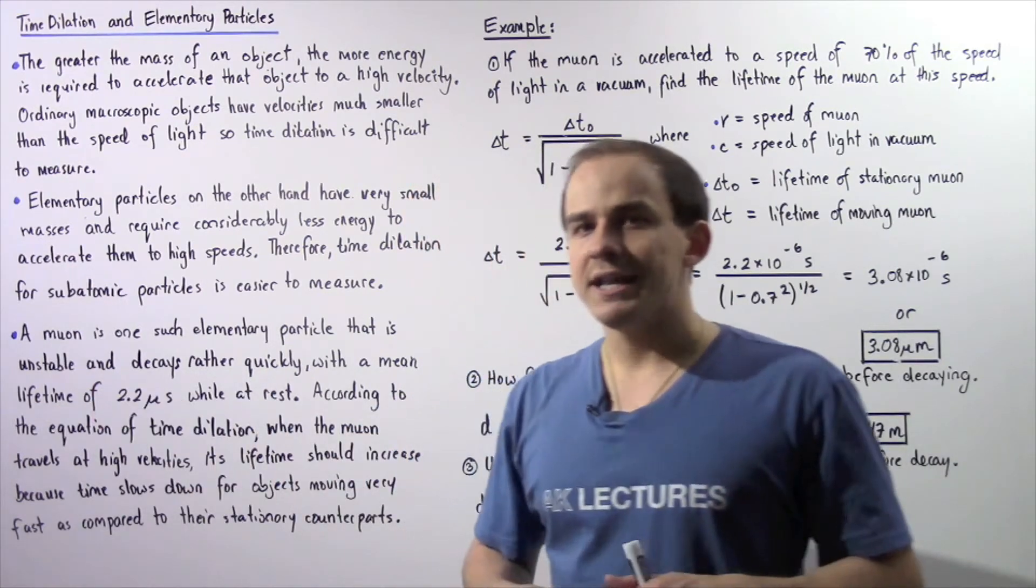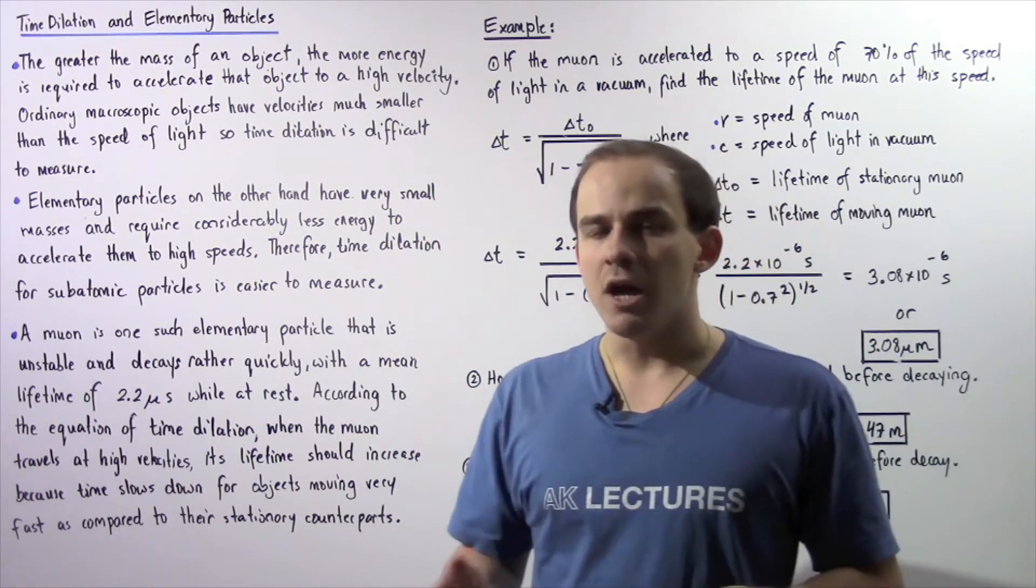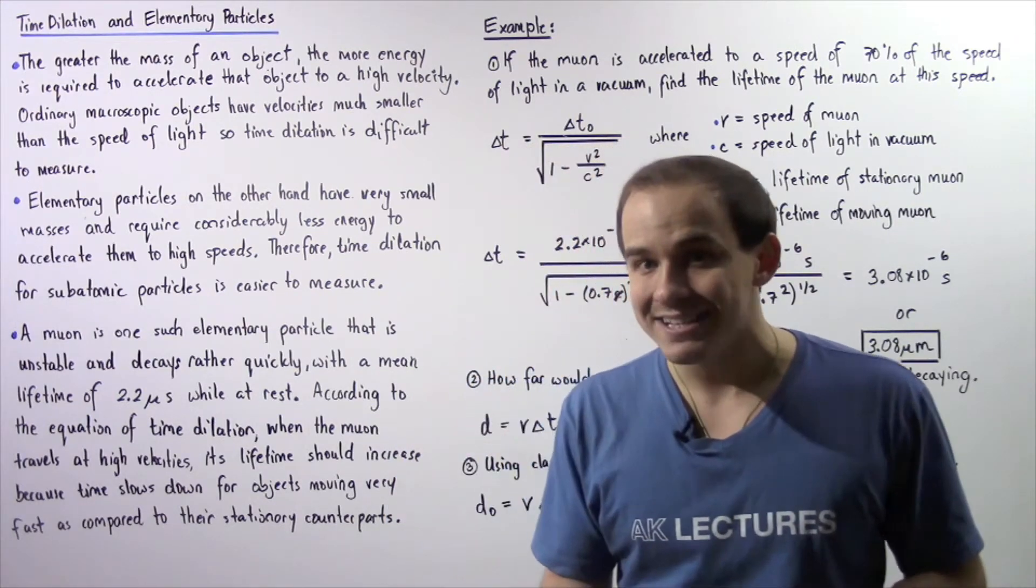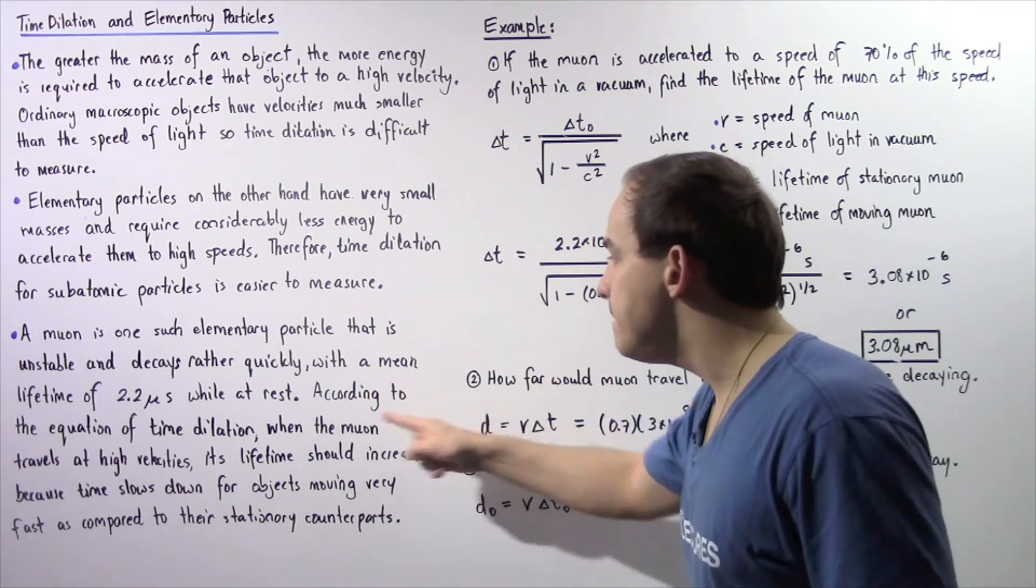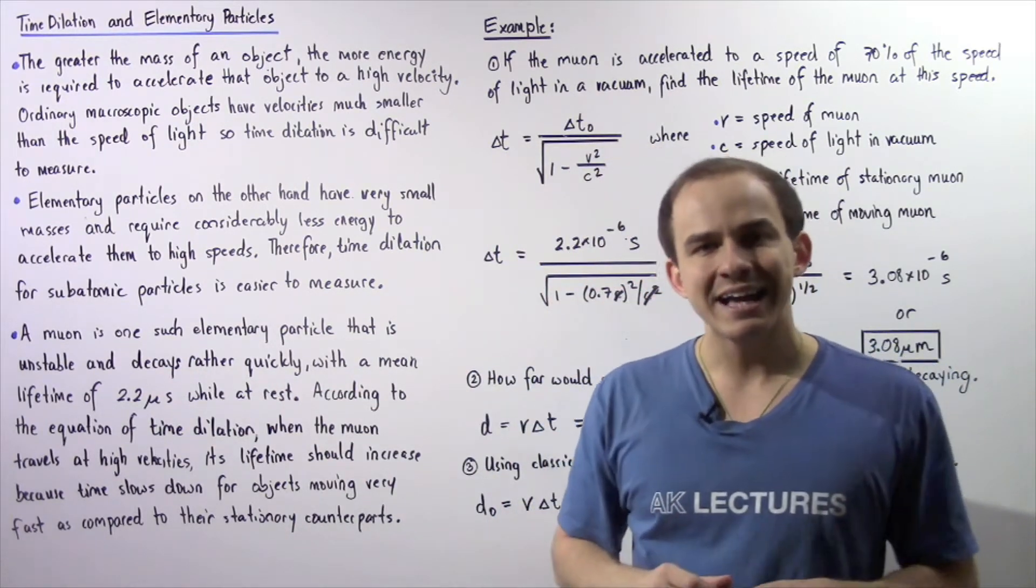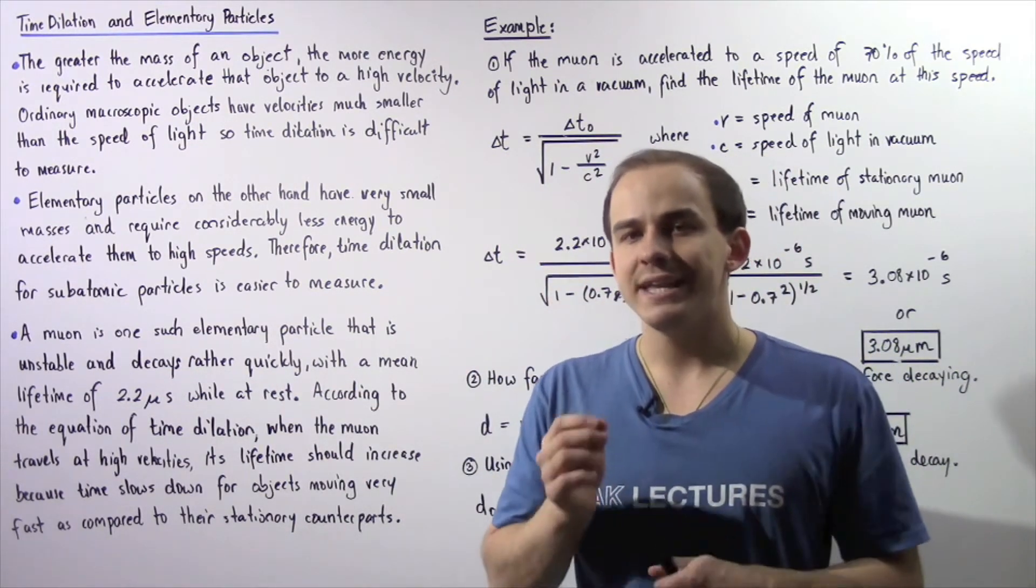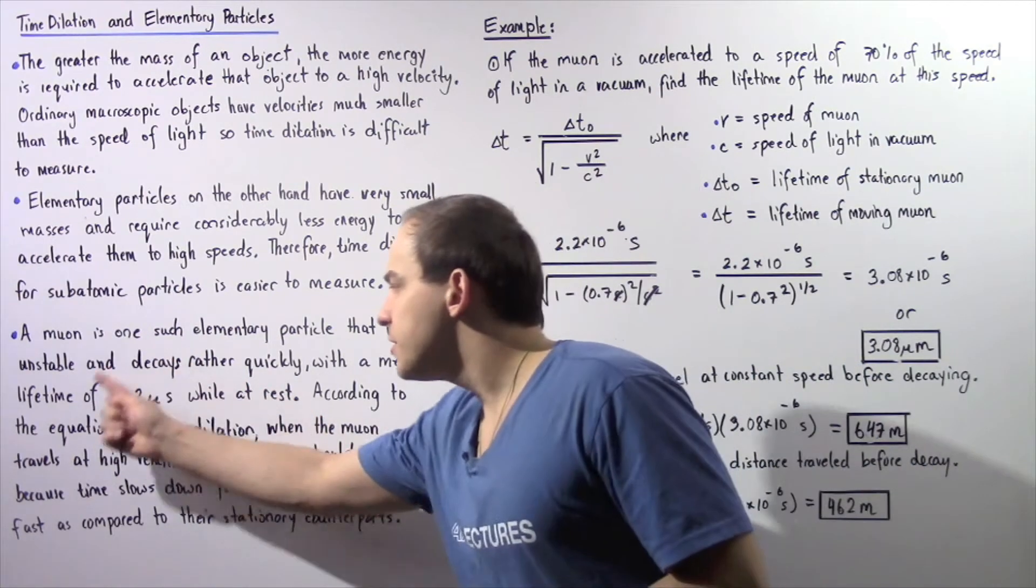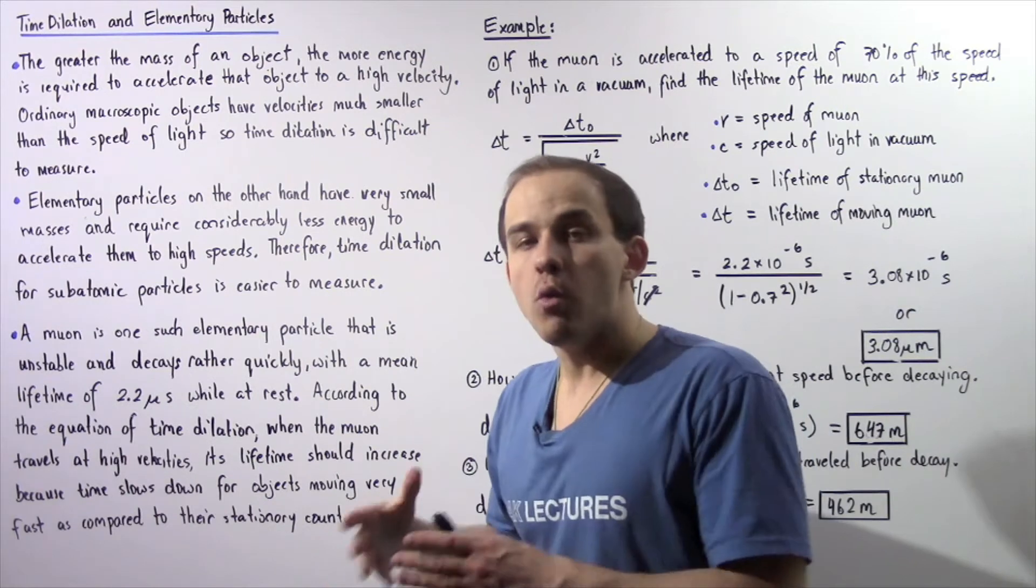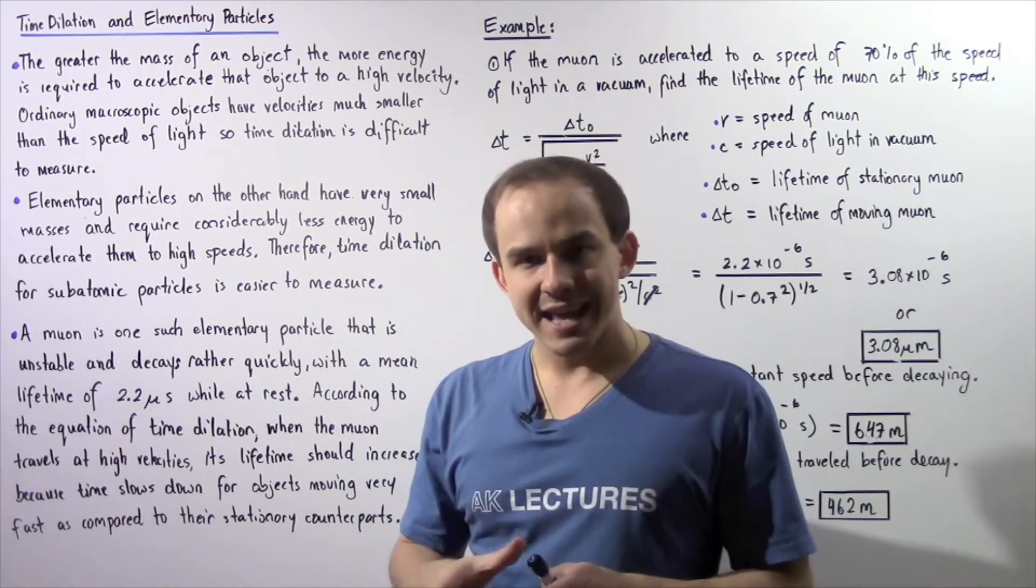Now a muon is one such example of an elementary particle that is unstable and decays with a mean lifetime of 2.2 microseconds when that muon is at rest. So this is how long it takes our muon to decay when that muon is stationary.